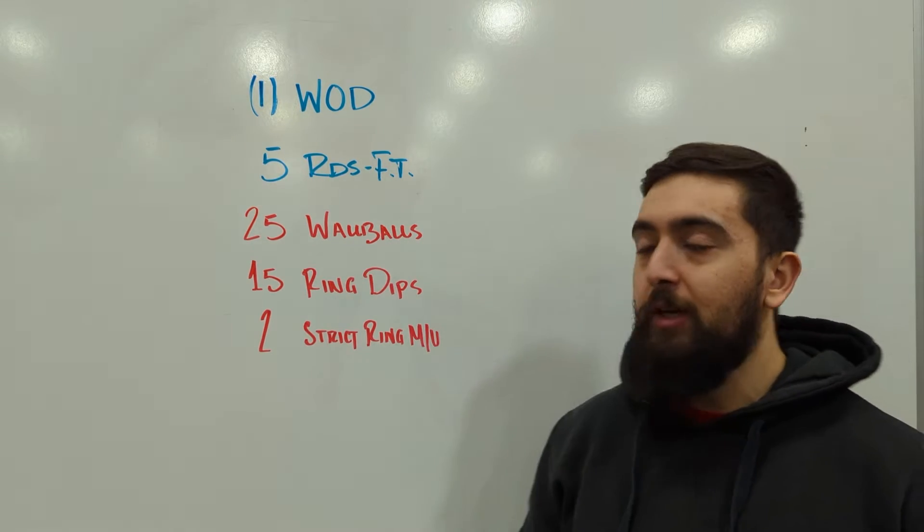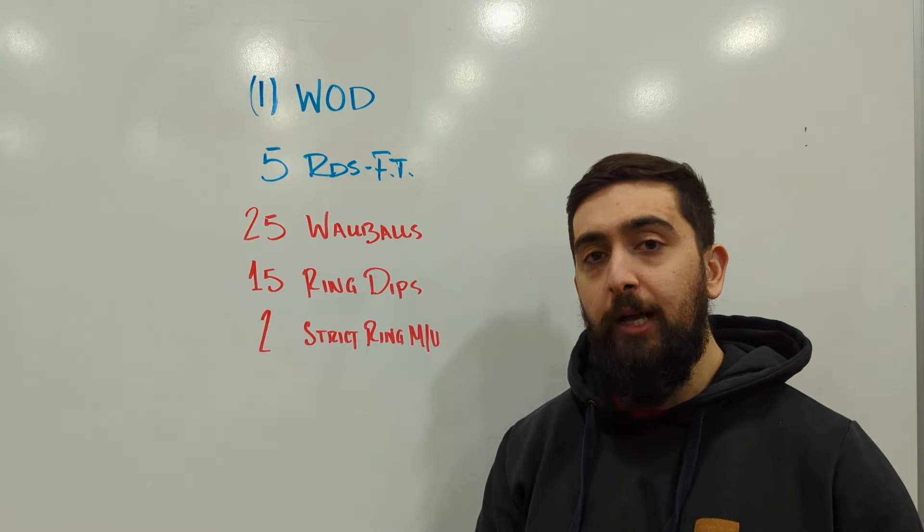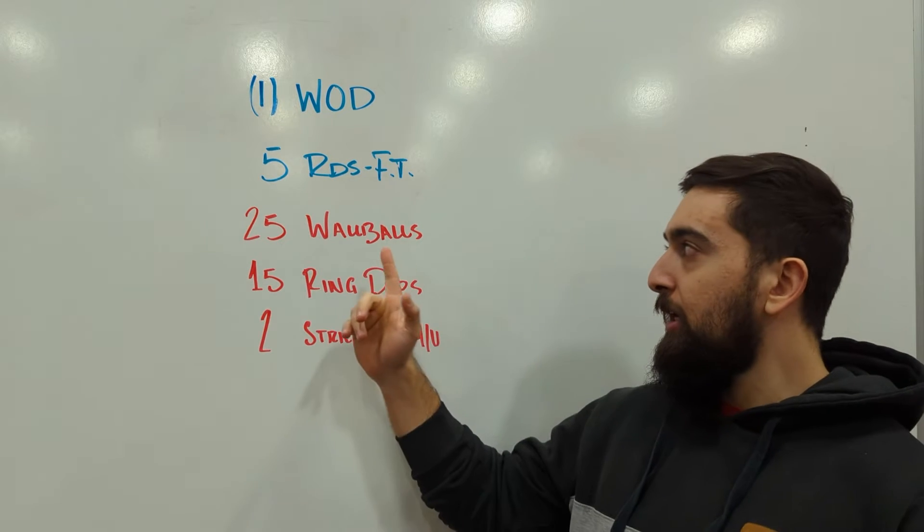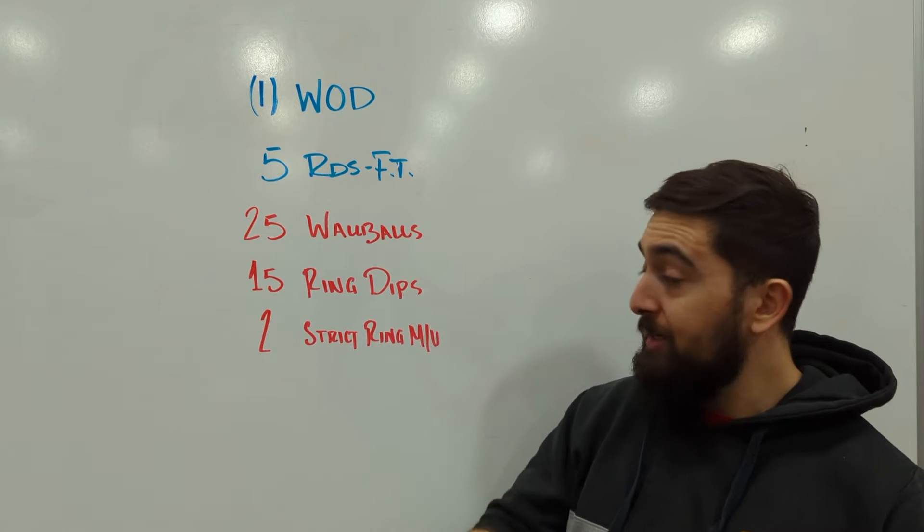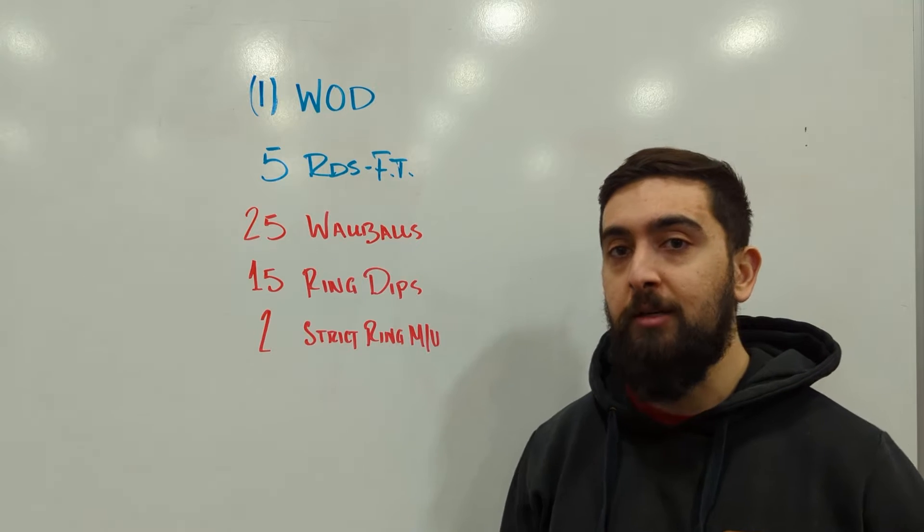So the focus of today is to build muscle endurance. We're building lower body and upper body muscle endurance. We got lots of wall balls and then with the ring dips and the ring muscle-up combo we're really working on that press here.